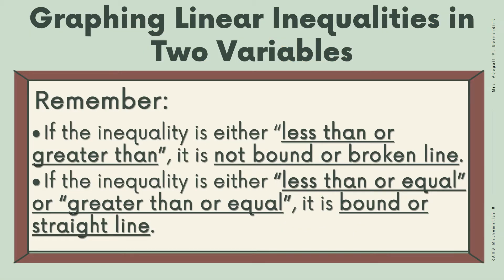When graphing linear inequalities in two variables, remember: if the inequality is either less than or greater than, it is an unbound or broken (dashed) line. If the inequality is either less than or equal, or greater than or equal, it is a bound or straight (solid) line.